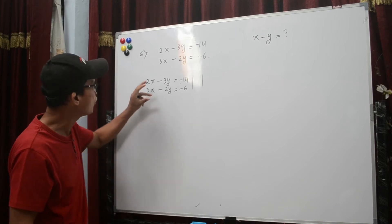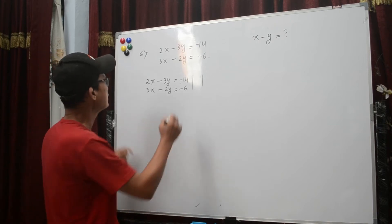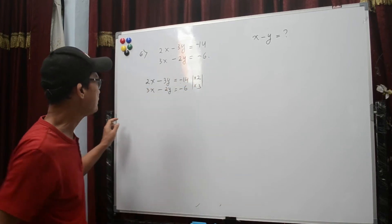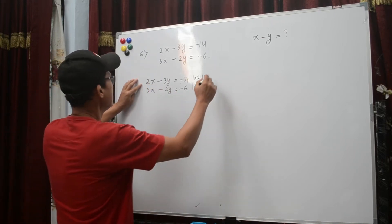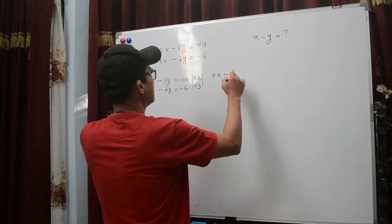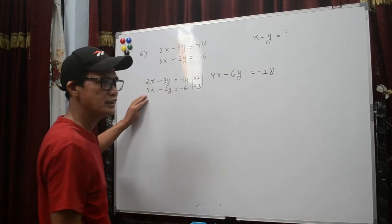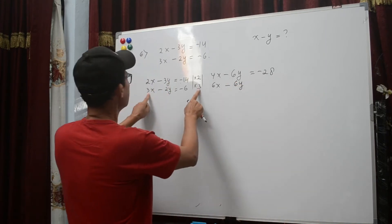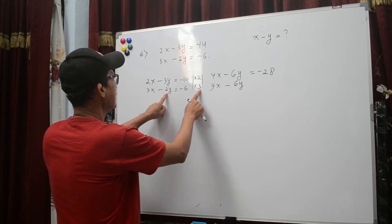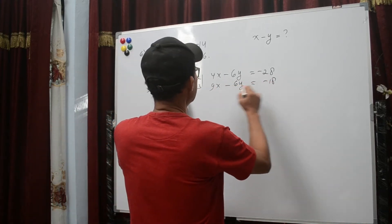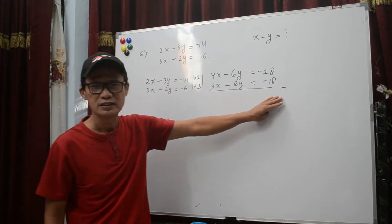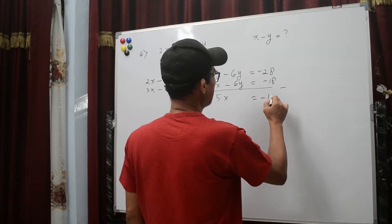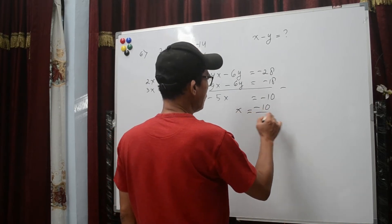We have to make the coefficients of y the same. So we multiply the first equation by 2 and the second equation by 3. The new system will be: 4x minus 6y equal to minus 28, and 9x minus 6y equal to minus 18. We subtract the first equation from the second, giving minus 5x equal to minus 10, so x equals minus 10 over minus 5, which is 2.